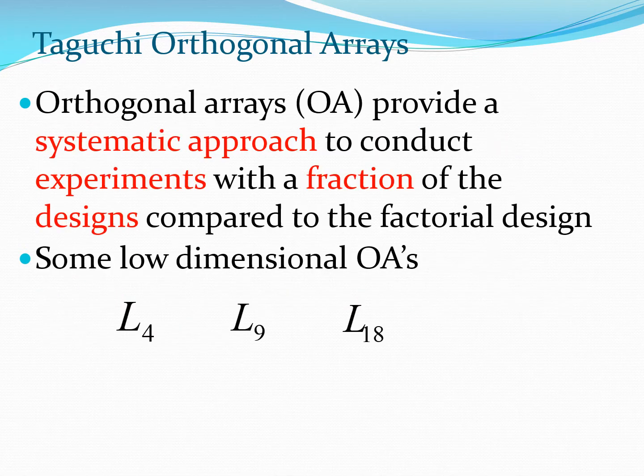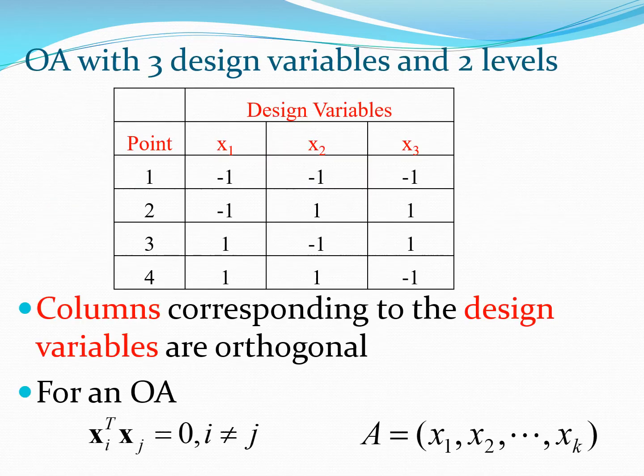Now we are going to look at some particular examples of these OA: the L4, the L9, and the L18. These are some of the lower dimensional values, and one of the advantages of using this kind of approach is that it provides a systematic way to conduct experiments with a fraction of designs compared to factorial design.